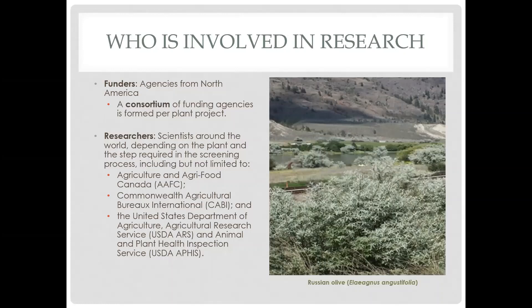BC provides funding to both Ag Canada — Agriculture and Agri-Food Canada — and CABI. CABI has several global labs, approximately eight across the world. The ones we fund are typically in Switzerland and the United Kingdom, while some work is conducted elsewhere depending on the needs of the plants, potential agents, scientific expertise, or even politics. Japanese knotweed is an example; they've been working closely with researchers in Japan for that plant.